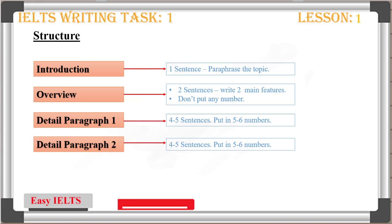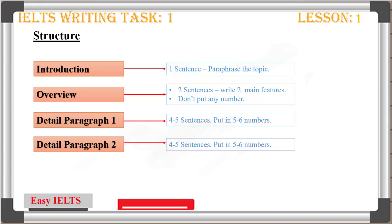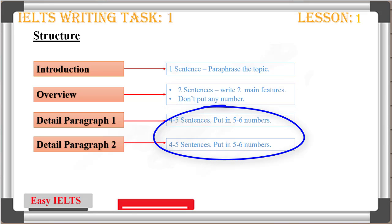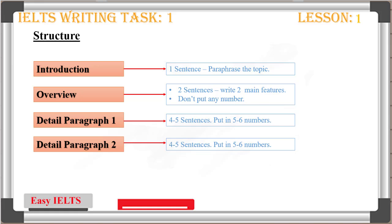As we have learnt in our last lesson, the introduction is just one sentence which rephrases the topic. The Overview mentions the two main features of the graph but doesn't actually give any specific numbers, while the two more detailed paragraphs should both consist of anywhere between four to five sentences and should mention even up to six numbers. By maintaining this structure, you will not only make it easier for your reader to understand the text, but it will also help you structure it and therefore write it faster.